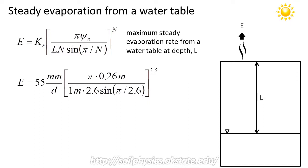Plug this into your calculator. I encourage you to start and work these from the inside out. So first start by calculating the argument for the sine function and then proceed outwards from there. And you will find the evaporation rate, maximum steady evaporation rate for clay loam soil with a water table at 1 meter depth is approximately 3.2 millimeters per day.